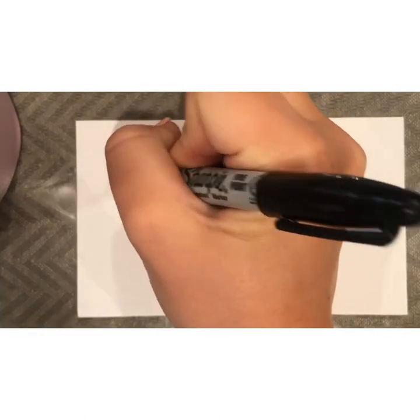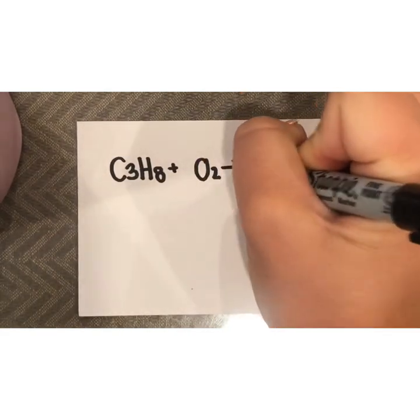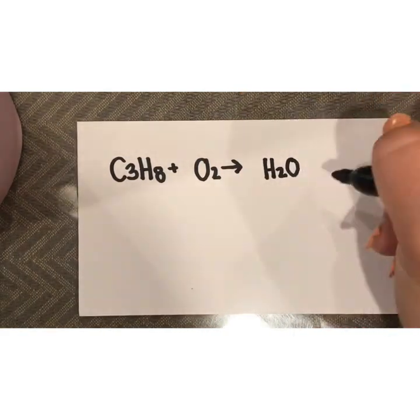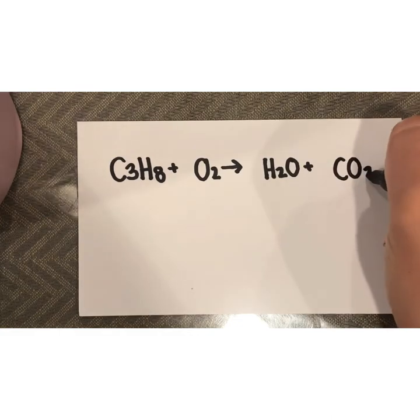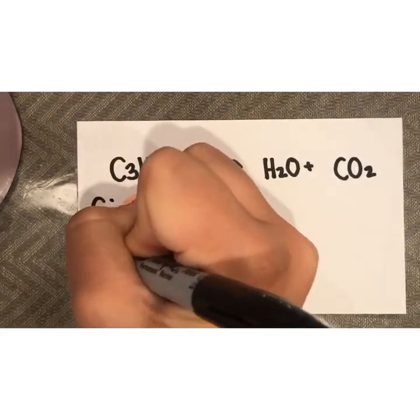Let's try one last problem. Let's do C3H8 plus O2 to make H2O plus CO2. Again, start by drawing your line down the middle and write out what you have on each side.